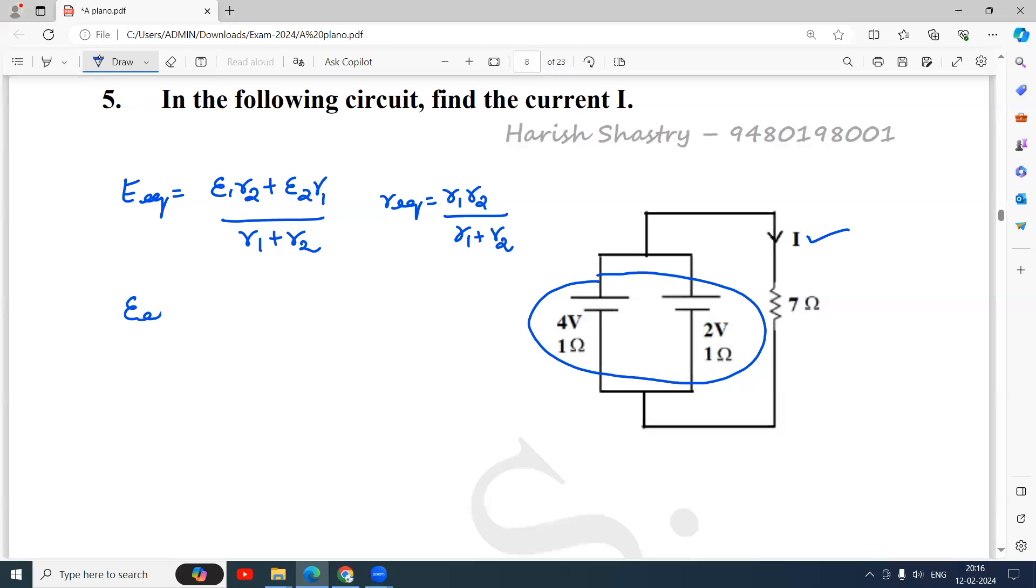And R equivalent is R1·R2 divided by R1 plus R2. So what is E equivalent? E equivalent is equal to E1·R2, 4 into 1, 4 into 1, plus E2·R1, 2 into 1, divided by R1 plus R2, 1 plus 1, 2. So that becomes 6 by 2, that is 3 volt. So equivalent emf is 3 volt.